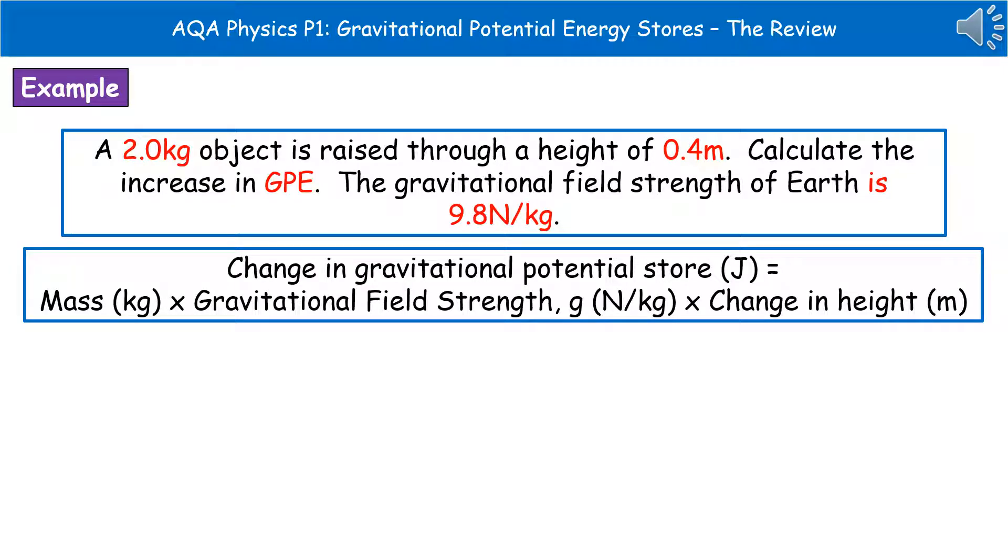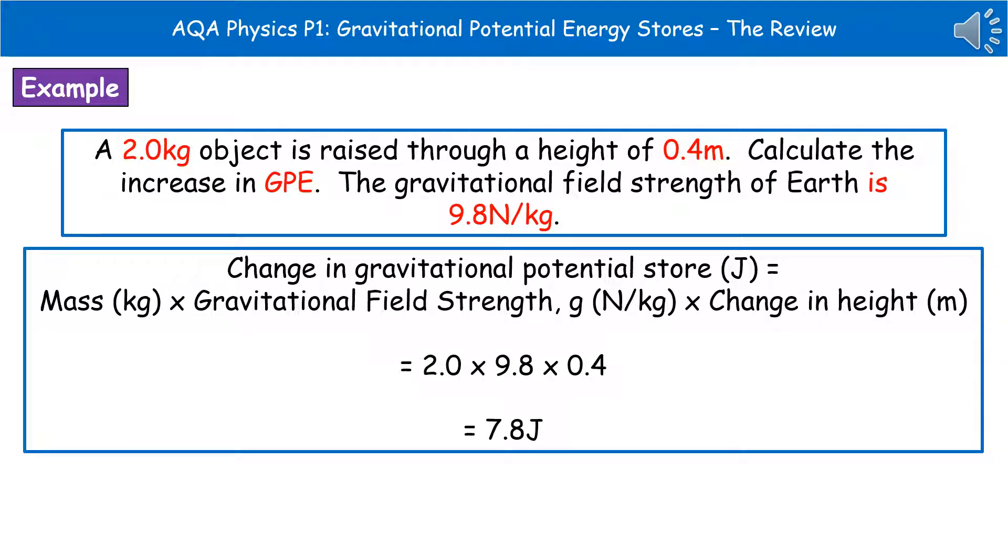Next up, we write down the actual formula we're going to use. In this case, change in GPE is mass times gravitational field strength times the change in height. Then we can substitute in our values: 2.0 times 9.8 times 0.4. Put those into our calculator, and then we get our answer of 7.8 joules.